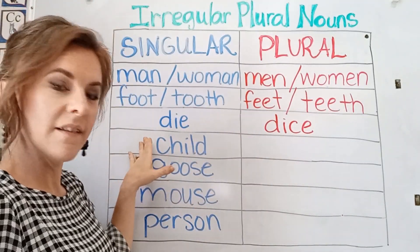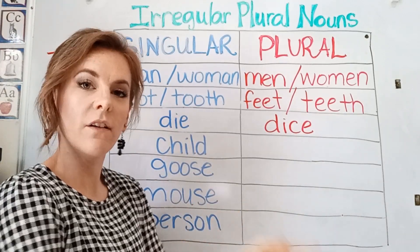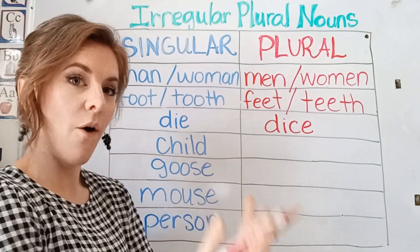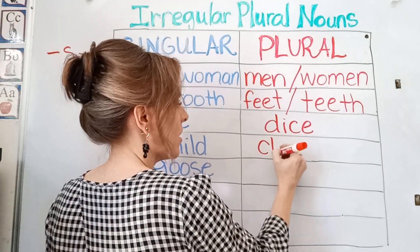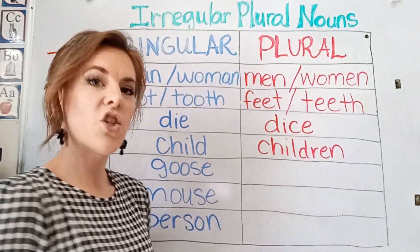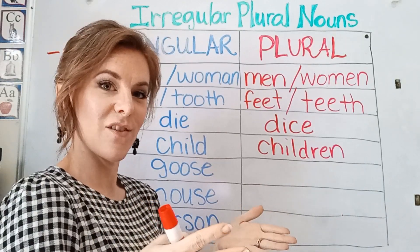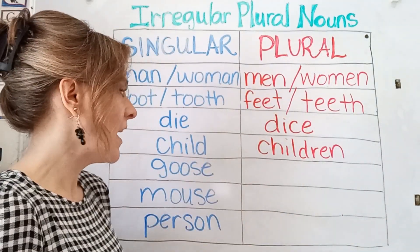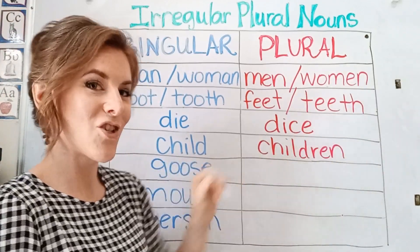Then we have child. There is a child sitting in the chair — that's just one child. But if there are more than one, they are children. The children are sitting in the chairs. So one child, more than one: children.